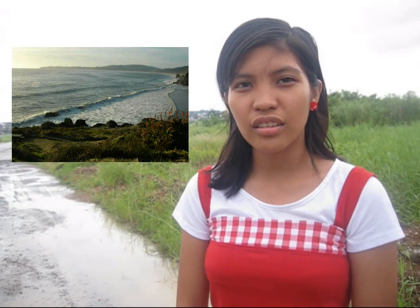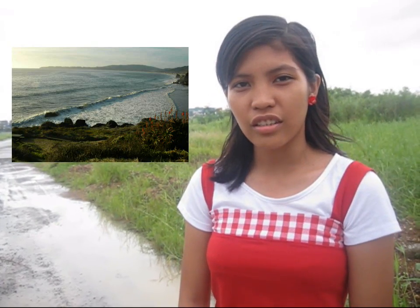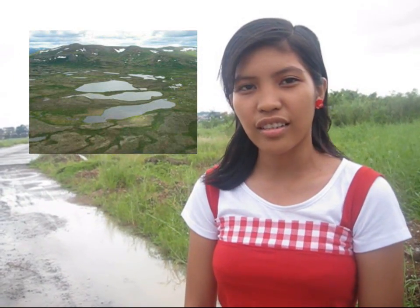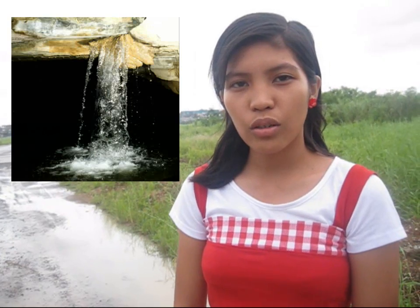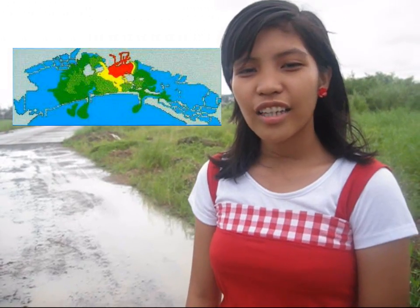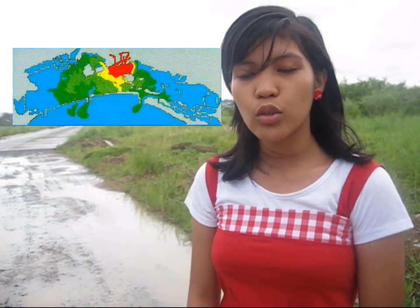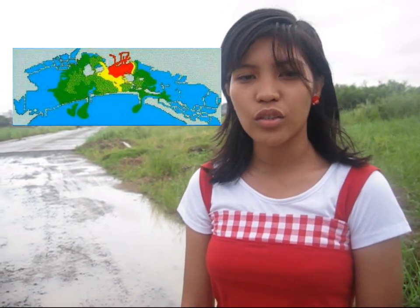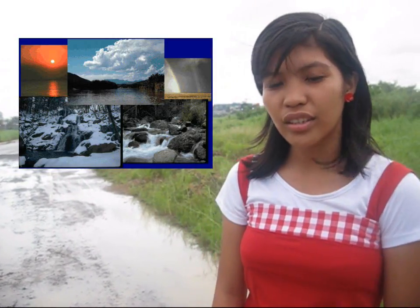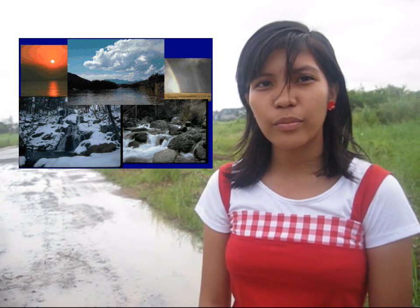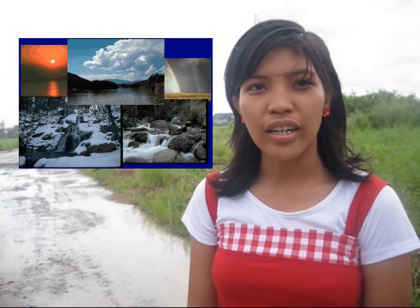Chemical hydrology is the study of chemical characteristics of water. Eco-hydrology is the study of interaction between organisms and the hydrologic cycle. Hydro-geology is the study of presence and movement of ground water. Hydro-informatics is the adaptation of information technology to hydrology and water resource applications. Hydro-meteorology is the study of transfer of water and energy between land and water body surfaces and the lower atmosphere.